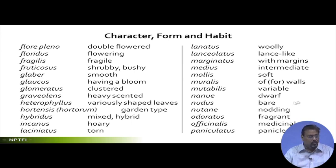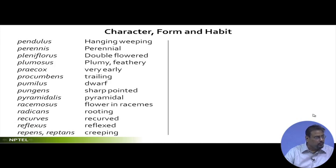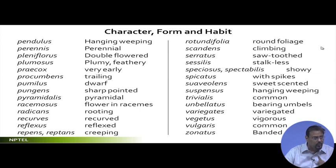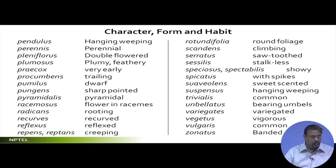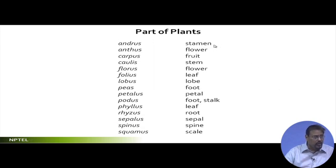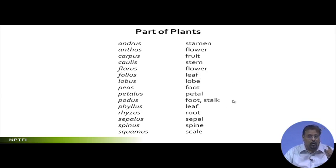For parts of the plants in nomenclature: andros refers to stamen, anthus is flower, carpus is fruit, caulis is stem, flores is flower, folius is leaf — and you remember longifolia means long leaf. Lobus is lobe, pes is foot, petalus is petal. Going through this list will give you a clear idea.